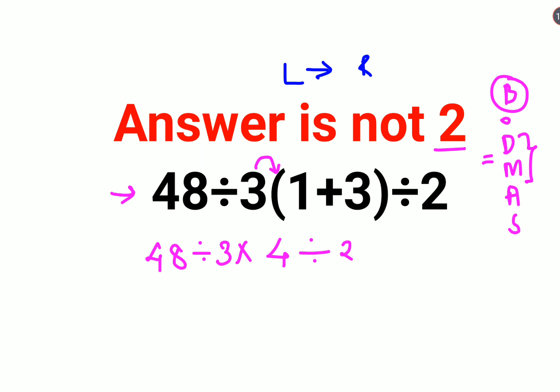So 48 divided by 3 is 16, times 4, divided by 2. 16 times 4 is 64, divided by 2. The answer comes out to be 32. Now you might be wondering, when will we get the answer as 2?